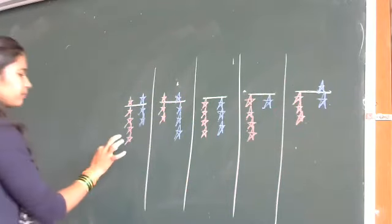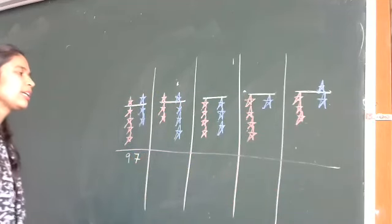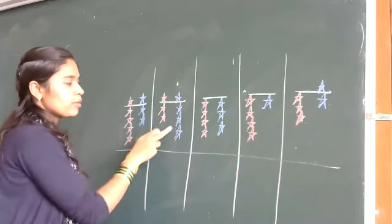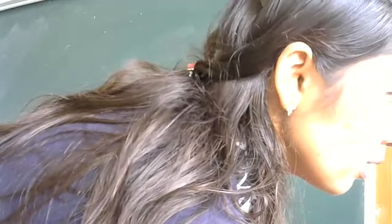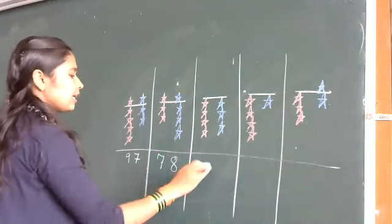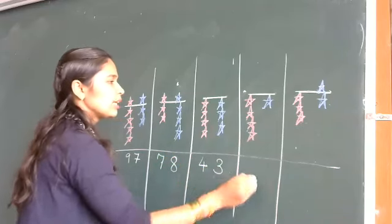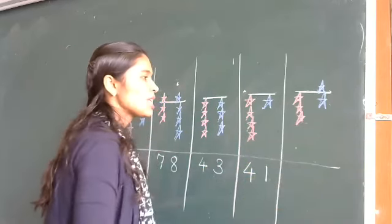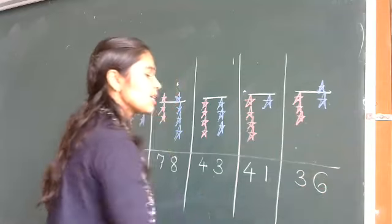Now tell me how much is it? It is 97. Now this? It is 79. How much is it? 70 and 8. Now this way: 4 — it is 40. Now this way: 40 and 5. Now the last one: 30 and 6 — correct.